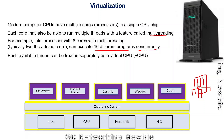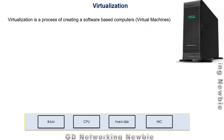Each available thread can be treated separately as a virtual CPU. So within a physical CPU chip we have different cores, and every core has multiple threads — every thread can be considered a virtual CPU. Virtualization is the process of creating software-based computers using this technology. Those software-based computers are known as virtual machines, and those virtual machines are given those virtual CPUs derived from threads.